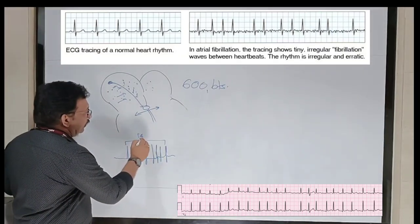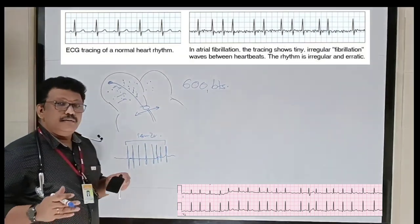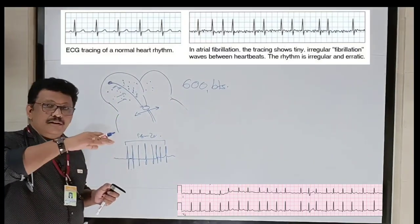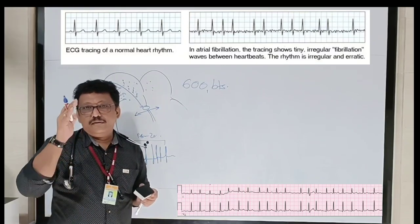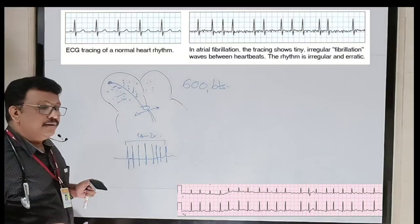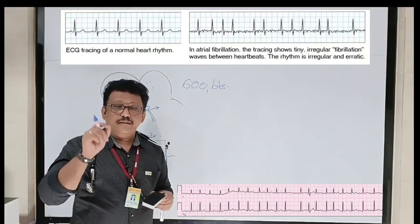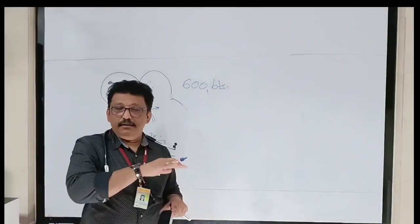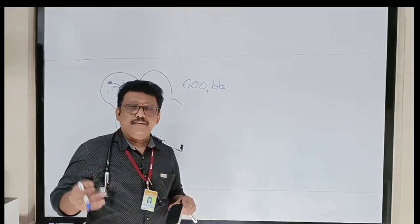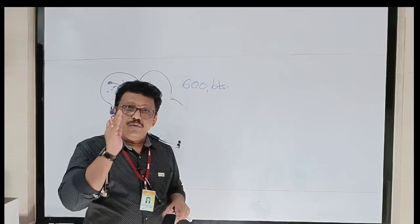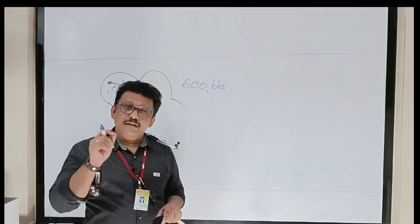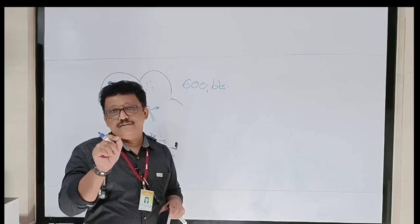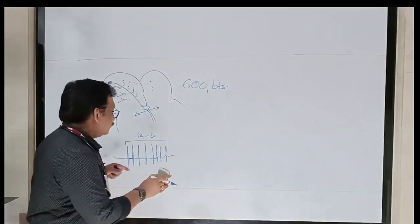The ventricular rate will be somewhere around 140 to 220. The atrial rate we cannot calculate — it is very high, more than 600. So the baseline will be a wavy baseline with irregularly irregular QRS complexes — that is very very important in atrial fibrillation. Sometimes you cannot see the wavy baseline at all in chronic atrial fibrillation, but the QRS complex is still irregular.